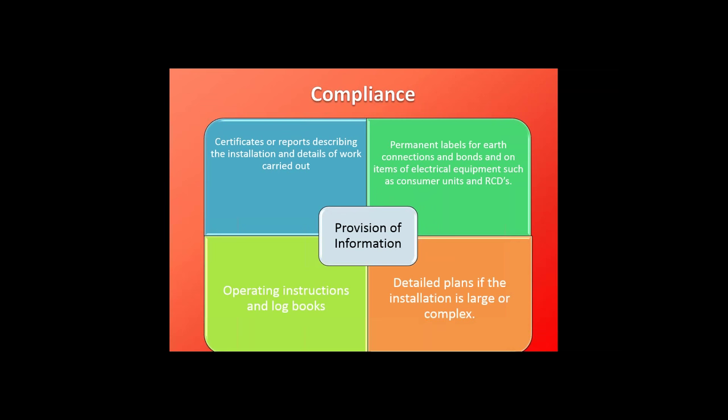When we get to the end of the job and are looking at compliance, part of the requirement now is to make sure that sufficient information is passed on to the end user of the property. All certificates relating to the work and details of the installation must be passed on. Where we have earth bonding and the like, the consumer unit must be clearly labelled — the circuits on the consumer unit should be clearly labelled so it's absolutely clear which fuses or micro switches control which circuit. Any operating instructions or logbooks also have to be left with the end user of the property.